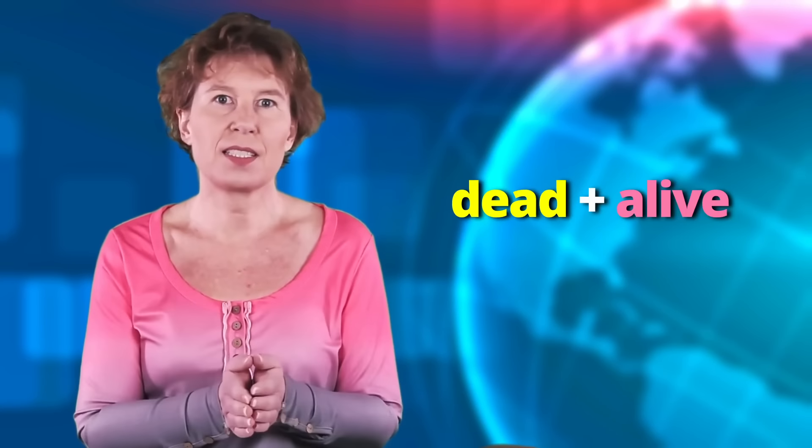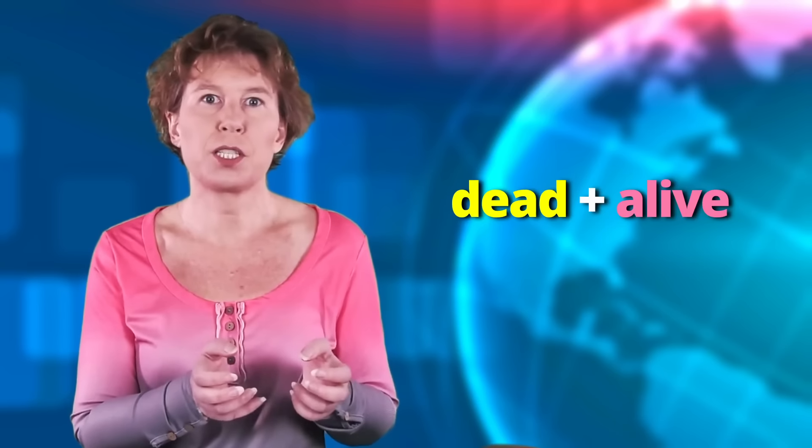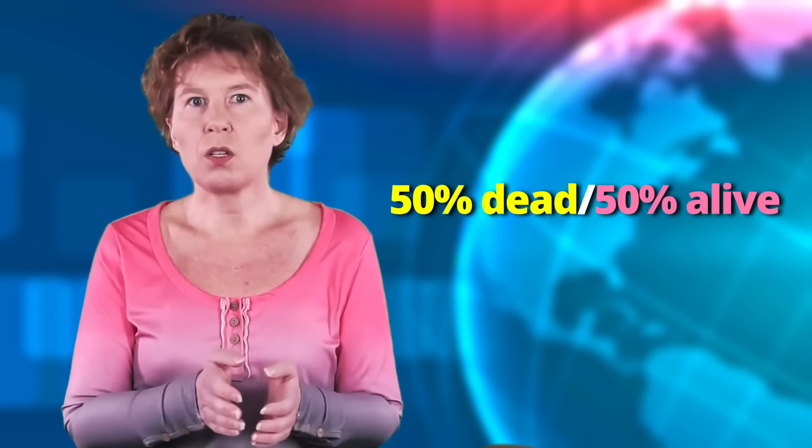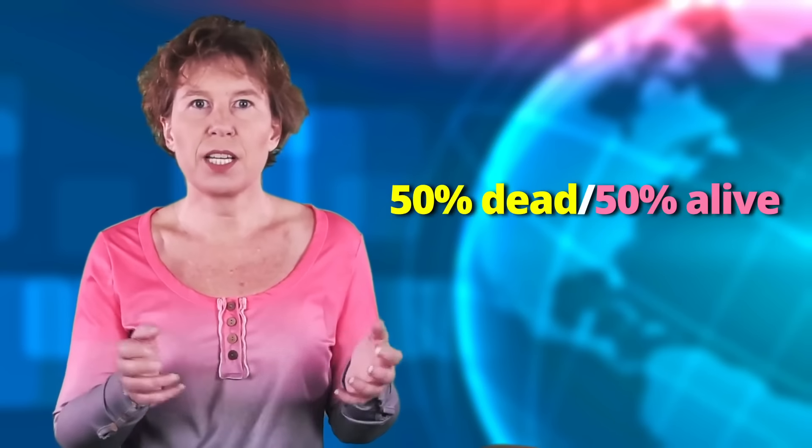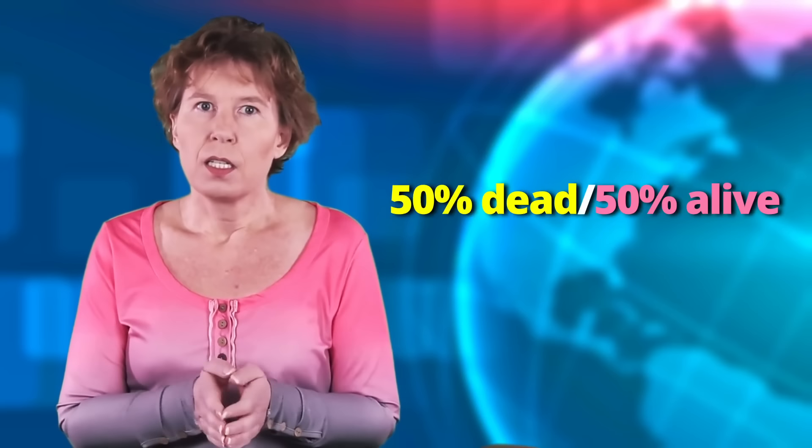But all this decoherence does is that it converts a cat which is in this funny dead and alive state into a cat that's dead with 50% probability and alive with 50% probability. This is no longer a quantum state because now you have normal probabilities, but it's not what we observe either. So physicists solved the question why we don't observe quantum properties of large objects, but they haven't figured out why objects always exist with probability either zero or one.